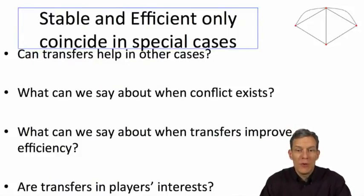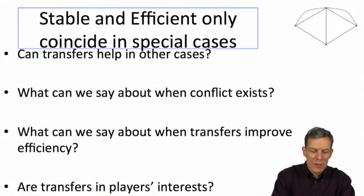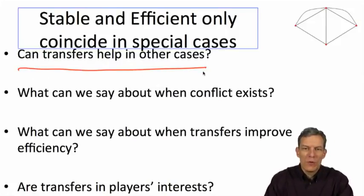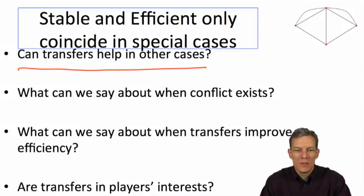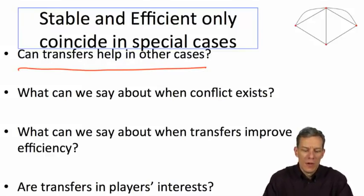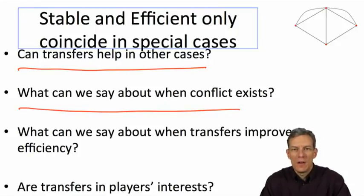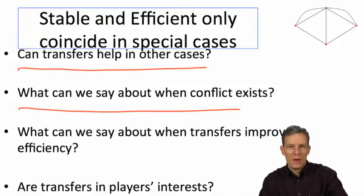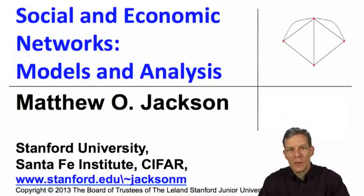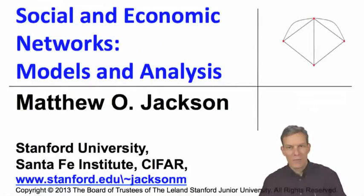Before in the connections model, we saw possibly too few connections because the center of a star might not be willing to maintain a relationship even though it's beneficial to other individuals. Stable and efficient networks are only going to coincide in special cases. So we can begin to ask: can transfers help — suppose we start subsidizing the center, will that help? Can we say things about when these conflicts occur, when transfers might improve efficiency, and whether transfers are going to be in players' interest? Those are some of the things we'll take up next in looking at whether transfers can help avoid some of the difficulties we have.